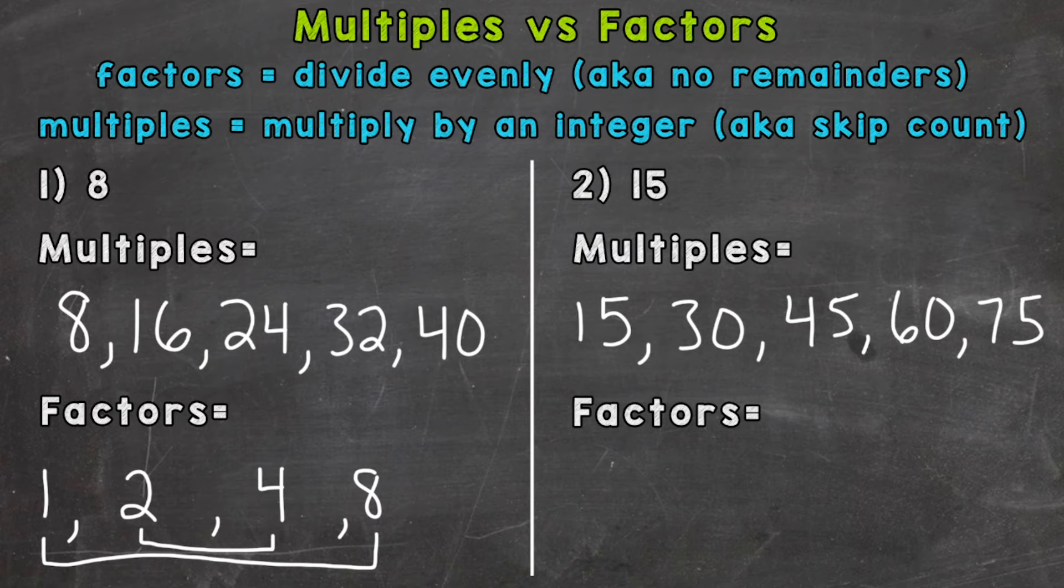As far as factors, remember, we start with one and the number itself, because one can go into 15, and then 15 can go into 15. I like to leave a little gap there. That way, if there are any other factors, I can list them in between one and 15, and they're all in order. So think about 15.